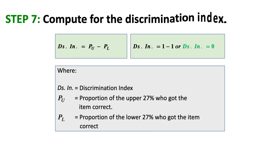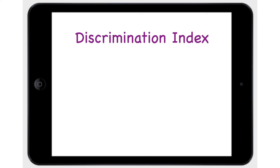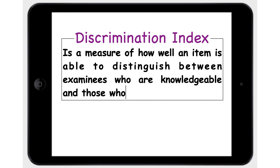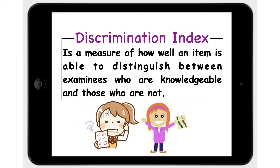Step 7: Compute for the Discrimination Index. The item Discrimination Index is a measure of how well an item is able to distinguish between examinees who are knowledgeable and those who are not. The item will have low discrimination if it is so difficult that almost everyone gets it wrong, or so easy that almost everyone gets it right. A good item discriminates between those who do well on the test and those who do poorly.